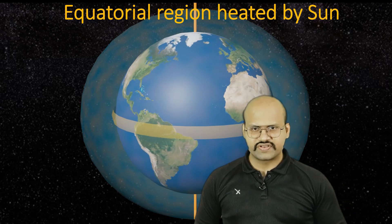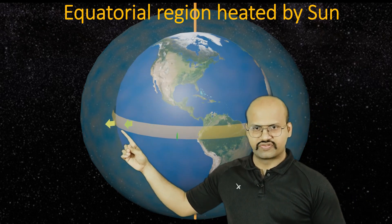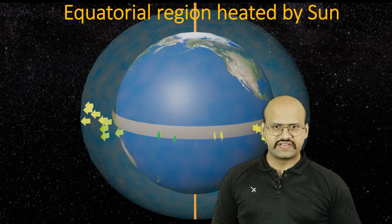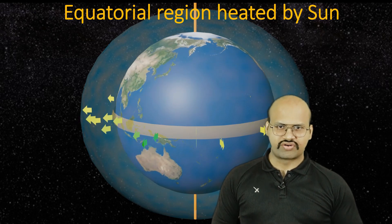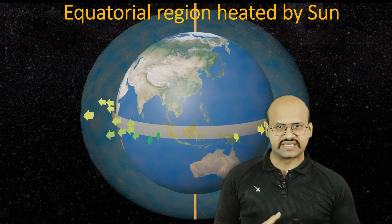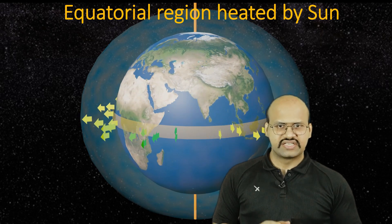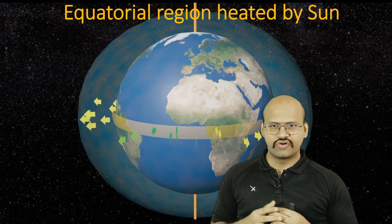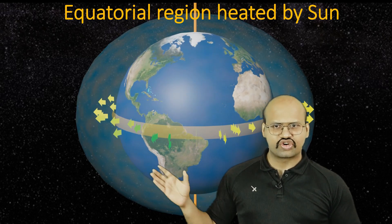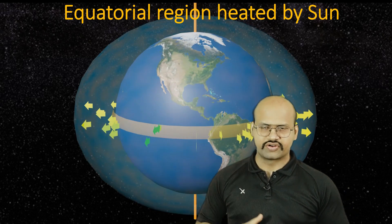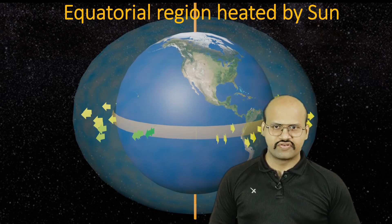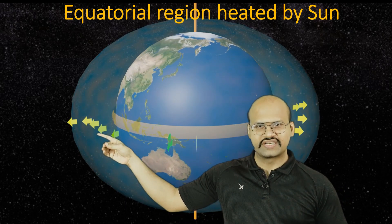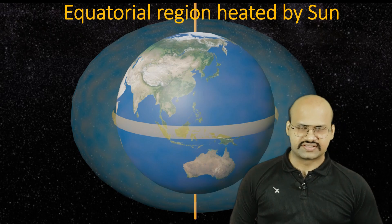In this image we can see the equatorial region of our Earth, marked in yellow. This region receives the maximum amount of heat throughout the year and therefore gets heated. The air in this region rises up. Because of the force created by this rising air, the troposphere is also stretched a little bit over here, and therefore the troposphere is slightly higher in the equatorial region compared to polar regions.